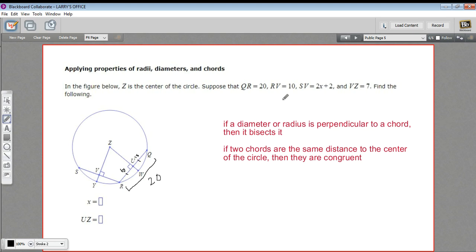Next, it says RV equals 10. Aha, so this is 10. And again, we have another perpendicular radius, so that means this side is 10. Aha, so that means this chord is 20. So these chords are congruent. That means they're the same distance from the center.